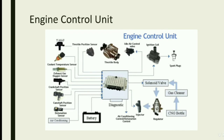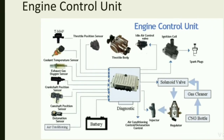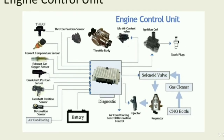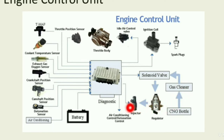Let's look at the Engine Control Unit. The name ECU was derived from 'Engine Control Unit,' and later so many electronics components were embedded with it that the name changed to 'Electronic Control Unit.' For controlling the engine, we have many sensors and actuators embedded with embedded programming — for example: throttle position sensor, throttle body, idle control valve, ignition coil, spark plug, solenoid valve.